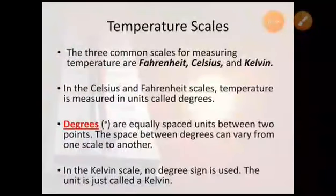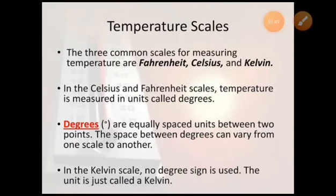Now we are going to study about the different temperature scales. The three common scales for measuring temperature are the Fahrenheit scale, Celsius scale, and Kelvin scale. In the Celsius and Fahrenheit scales, the temperature is measured in units called degrees. These are equally spaced units between two points, and the space between degrees can vary from one scale to another. In the Kelvin scale, no degree sign is used and the unit is just called a Kelvin.